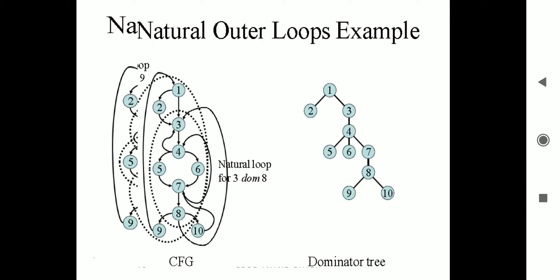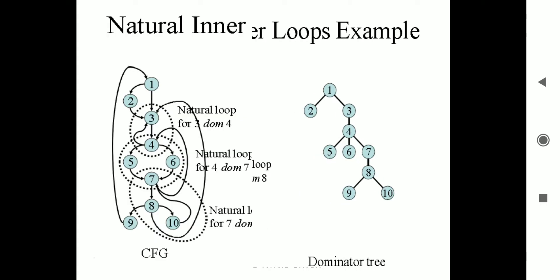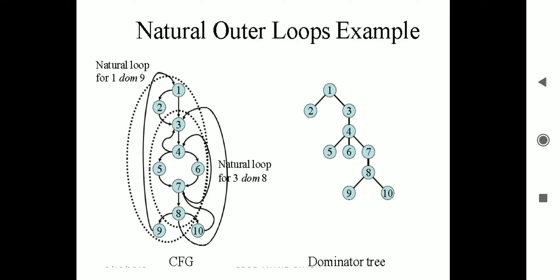We see both inner loops and outer loops. The outer loop: 1 dominates 9, so control goes from 1 through 2, 3, 4, 6, 7, 8, 9 and back to 1 continuously. Whenever it breaks, it goes to 10. This is the natural outer loop. The dominator tree concept is basically used to identify inner loops and outer loops within particular basic blocks.